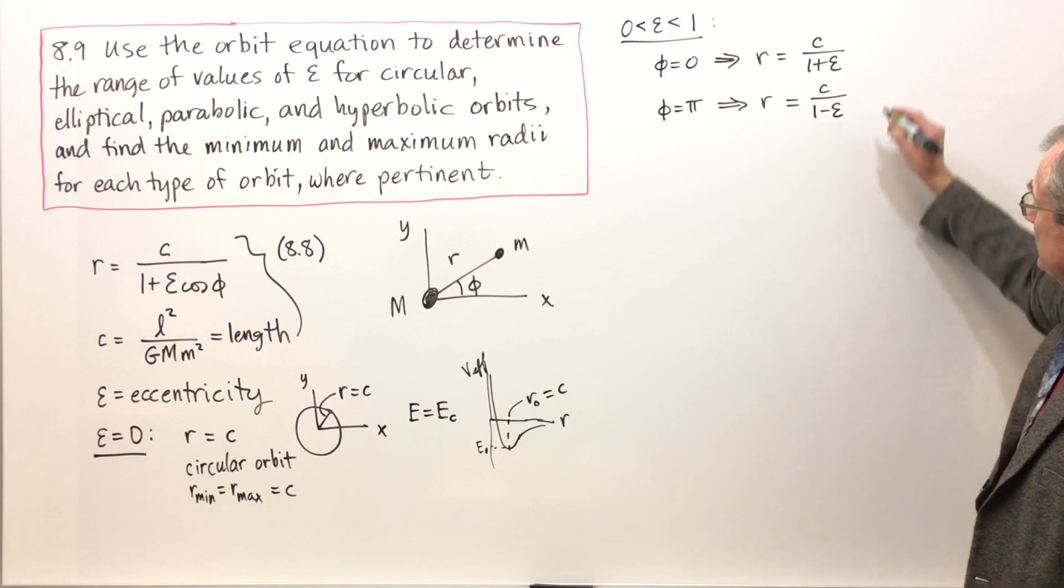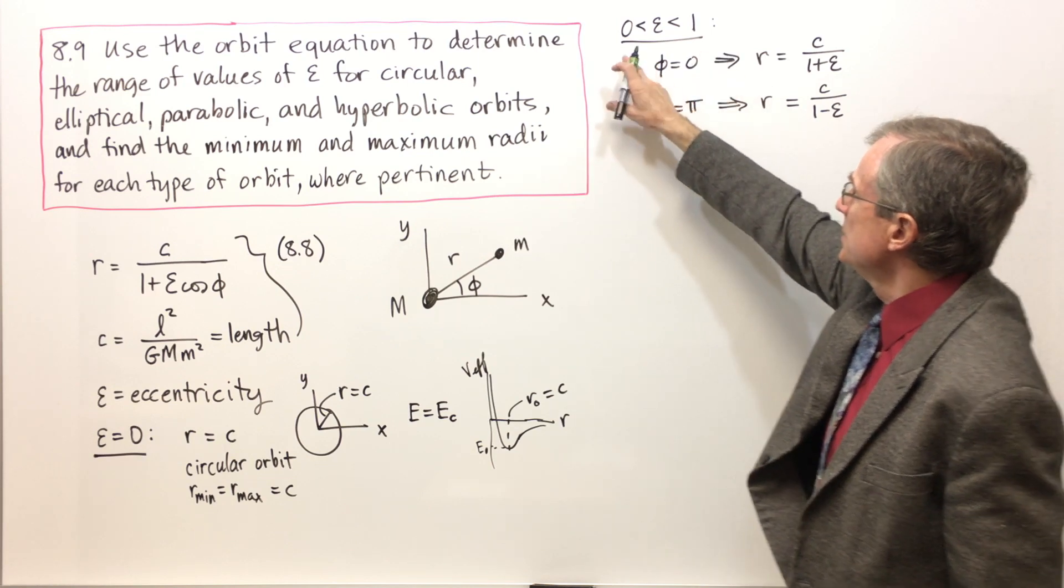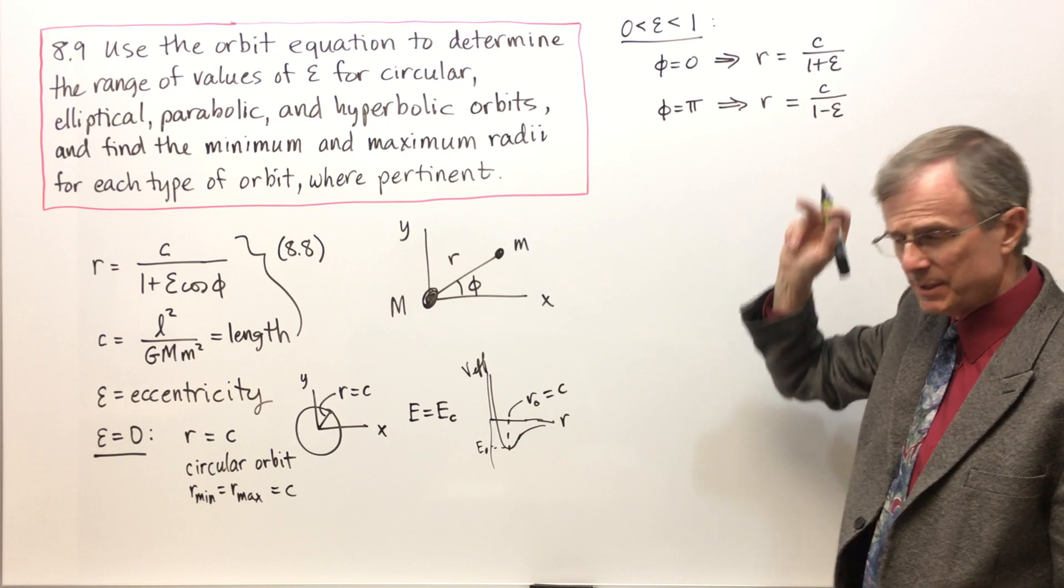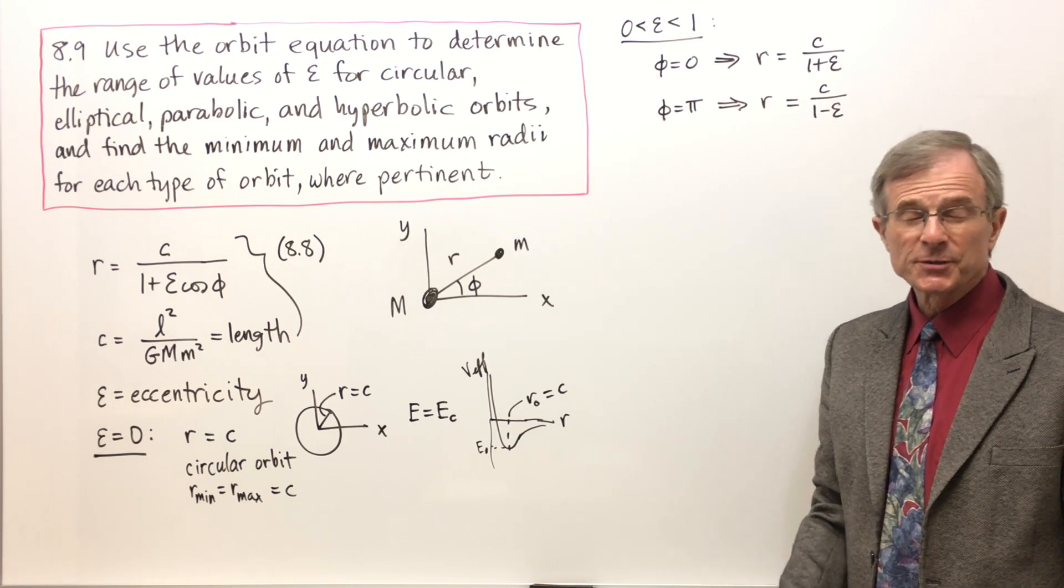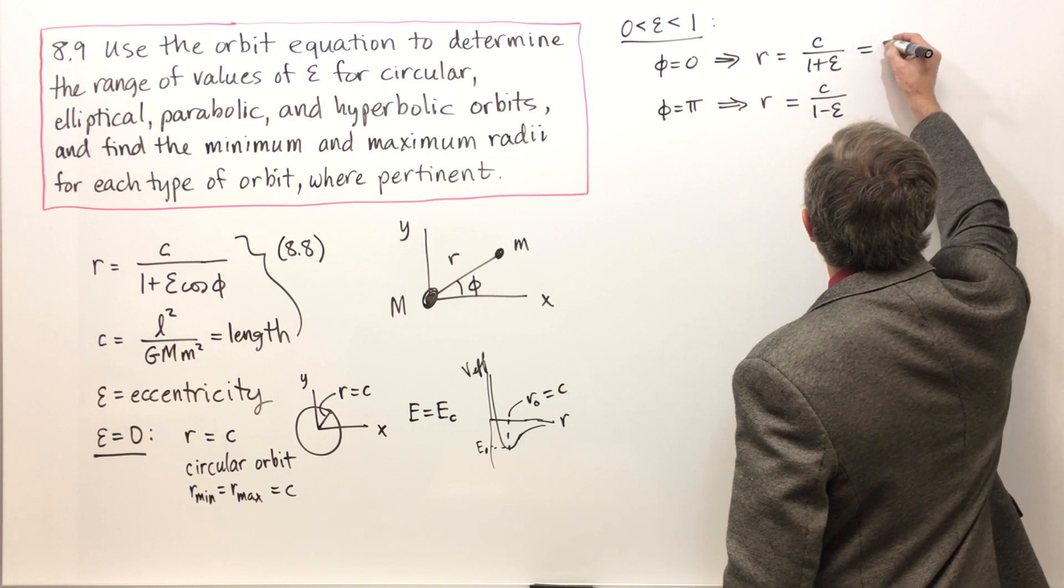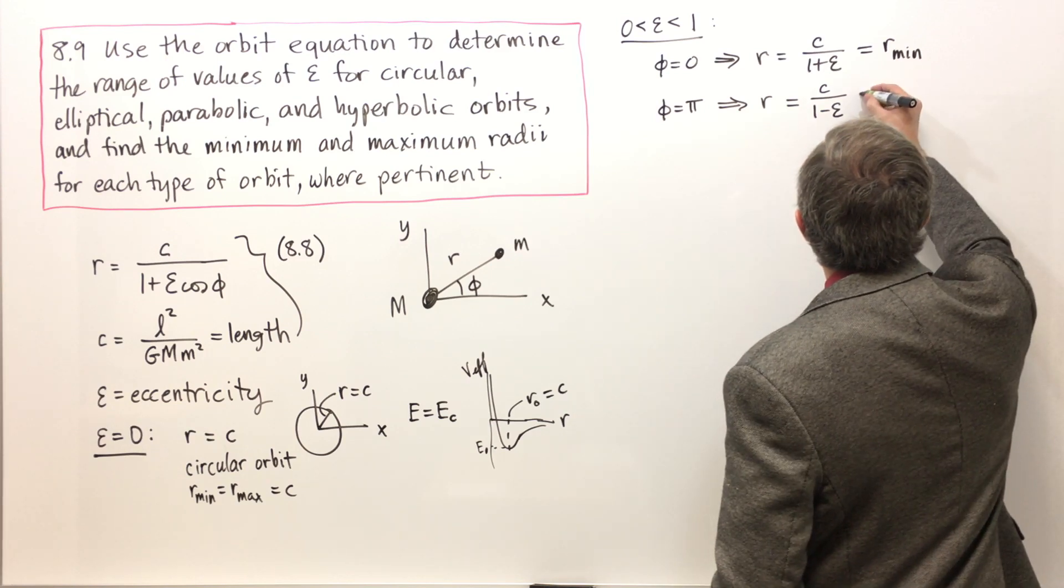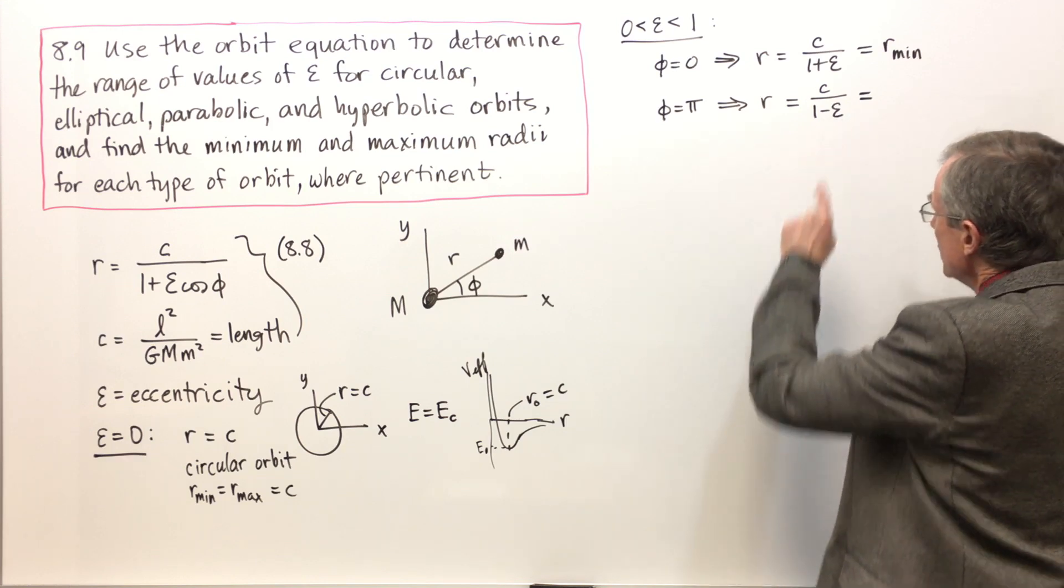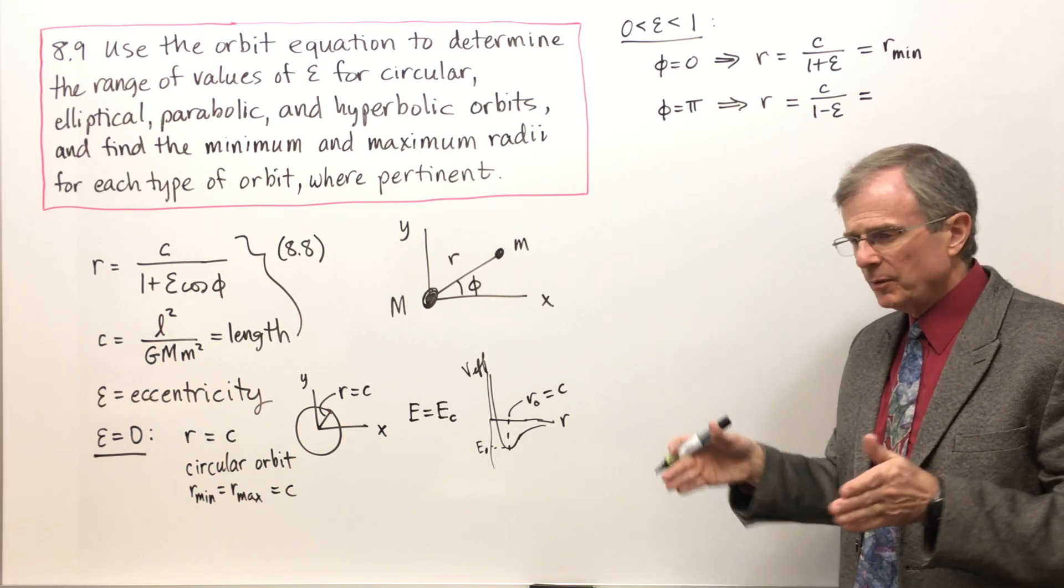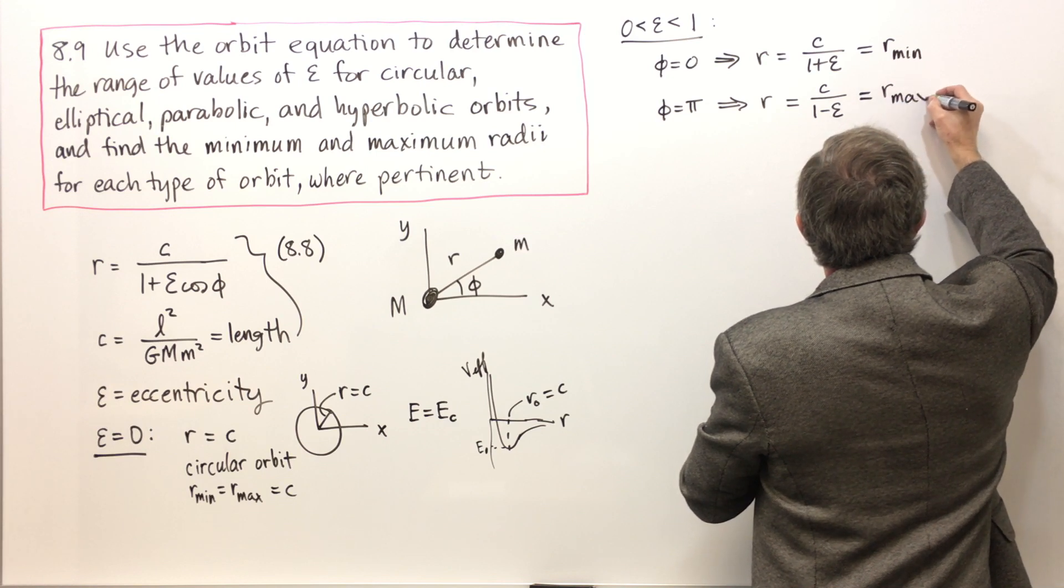Which of these is bigger than the other? Epsilon is a number between zero and one, so it's positive. In this case, we're adding something positive to one, increasing the denominator. If you increase the denominator, the fraction decreases. So the bigger the denominator, the smaller the fraction. This will be a minimum. Here we're subtracting something between zero and one from one, so the denominator is still positive but smaller. You decrease the denominator and you increase the fraction, so this will be the maximum radius.